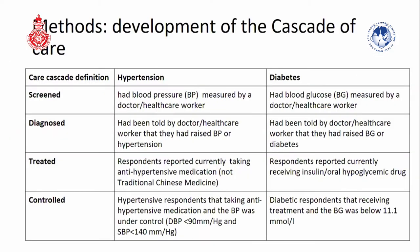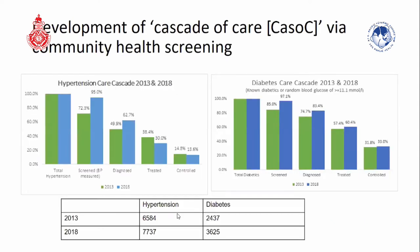We developed a cascade of care using descriptive data analysis, looking at whether blood pressure or blood glucose were measured, whether hypertension and diabetes were diagnosed, whether populations were currently receiving treatment, and whether blood pressure and blood glucose were under control. Comparing 2013 and 2018, there were many improvements in screening and diagnosis.